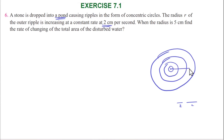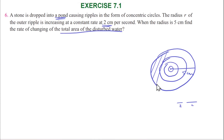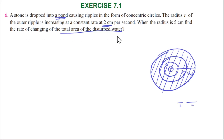We need to find the rate of change of the total area of the disturbed water. So we are finding dA/dt — the rate of change of area with respect to time, not with respect to radius.